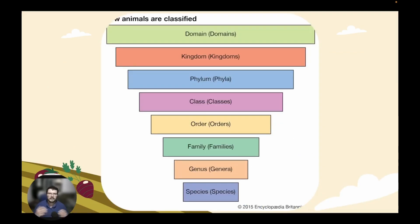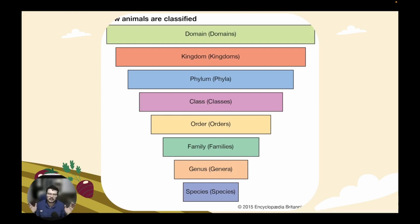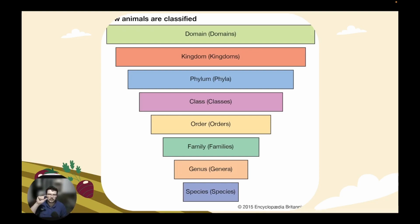In the Linnaean classification system, we have many levels. We have the domain, which is the highest level — things like animals, plants, and fungi. Then we have kingdoms, which fall within a domain. Within a kingdom, we have a bunch of phyla. We have classes inside of a phylum, orders inside of a class, families inside of the order, genus inside of the family, and species inside of the genus. Think of it like Russian nesting dolls — we have a big one on the outside and get smaller and more specific until we finally get to the tiniest one on the inside, which is our species.